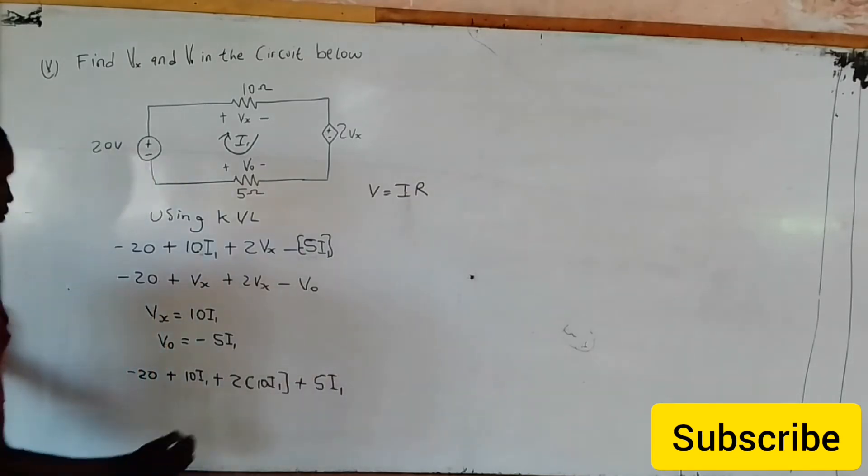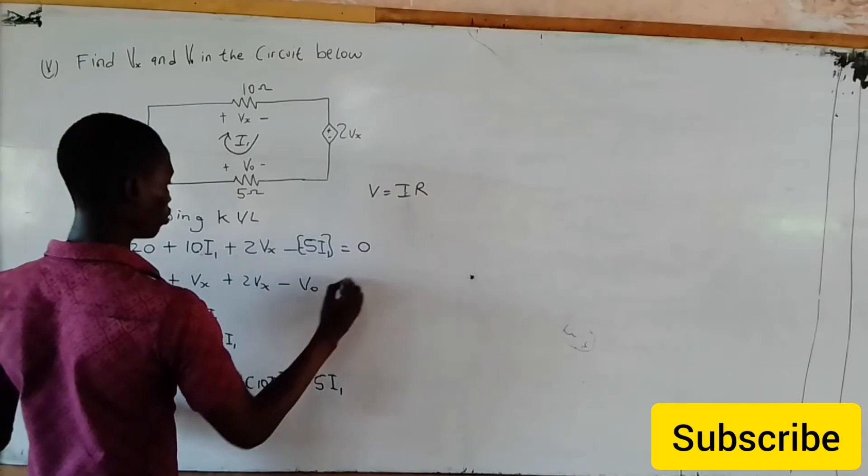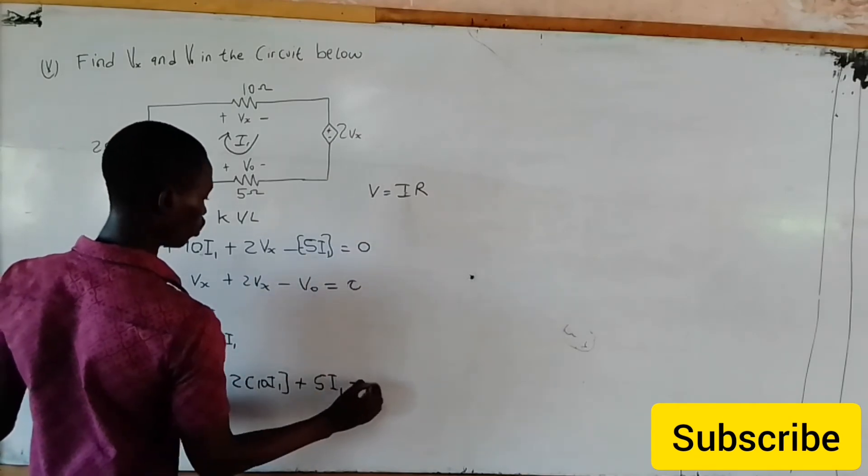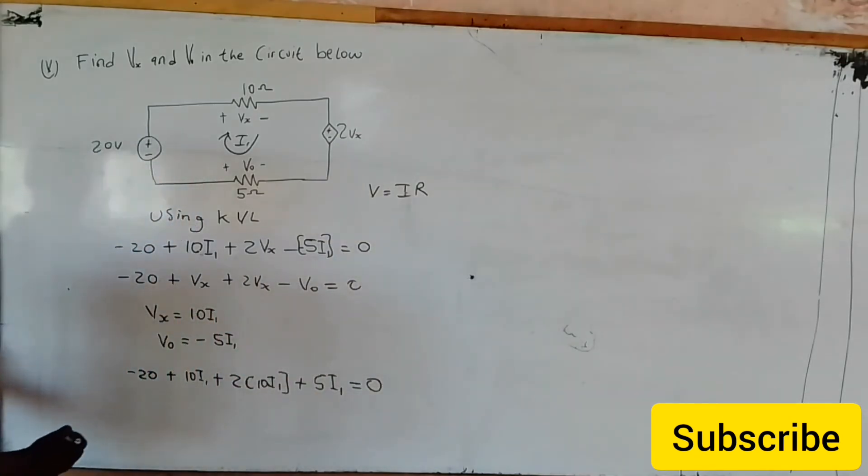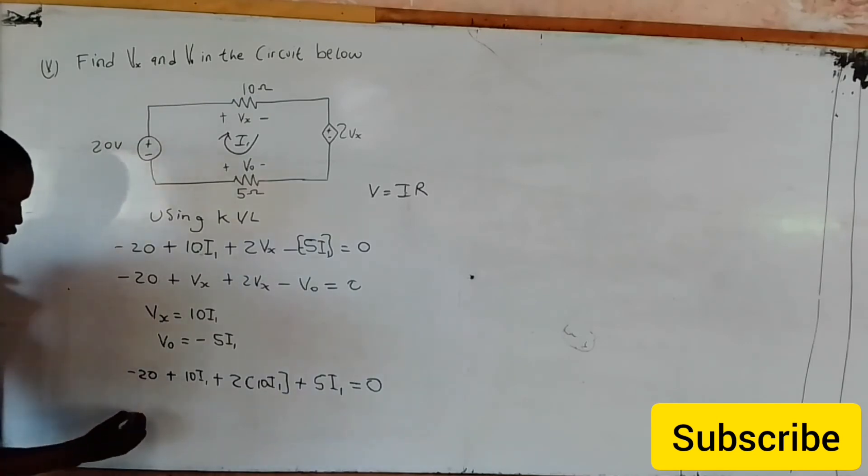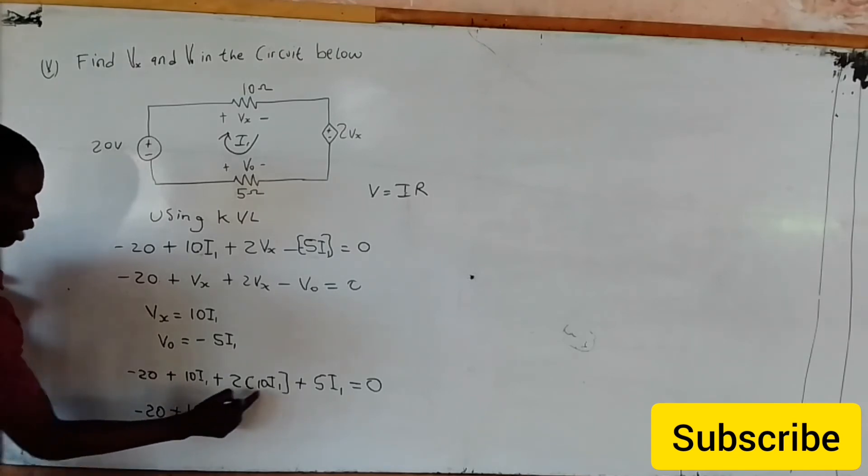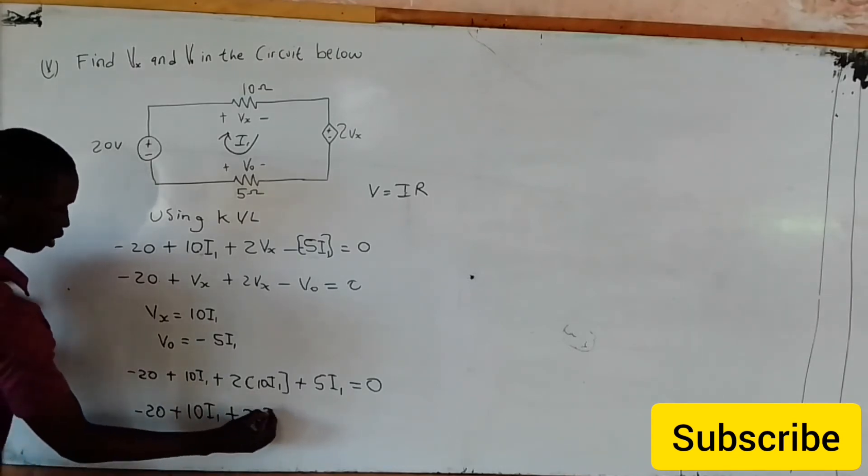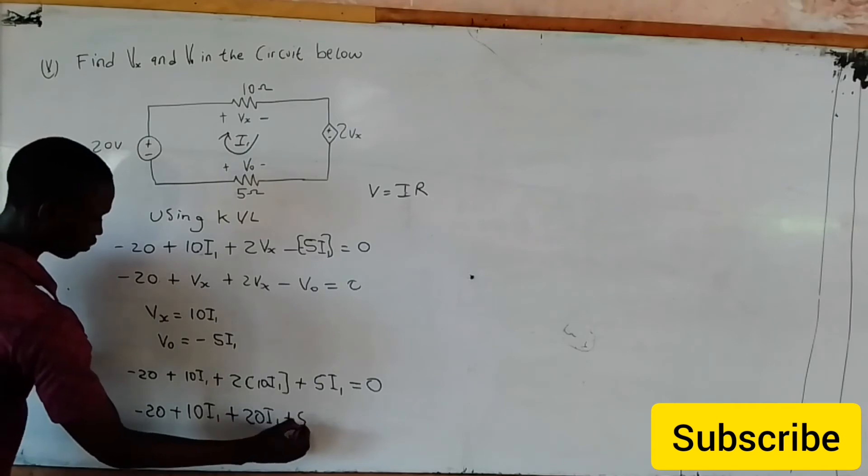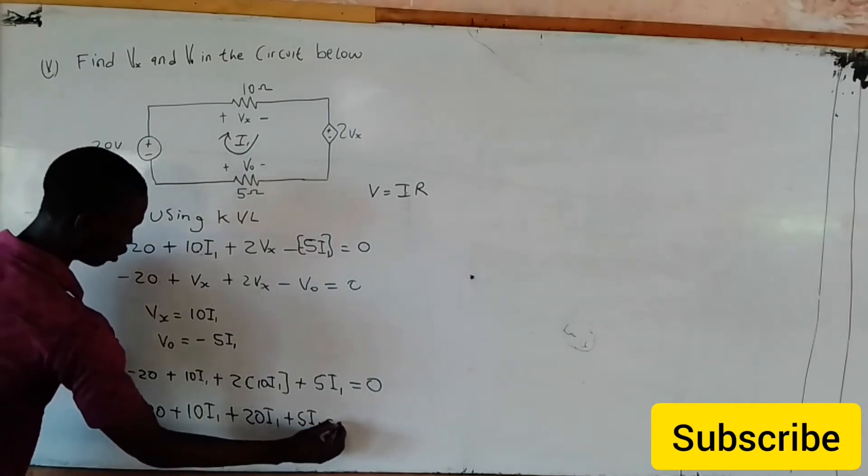Plus 5I1 equals zero. So minus 20 plus 10I1 plus 2 times 10 is 20I1 plus 5I1 equals zero.